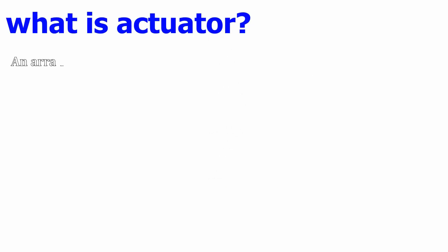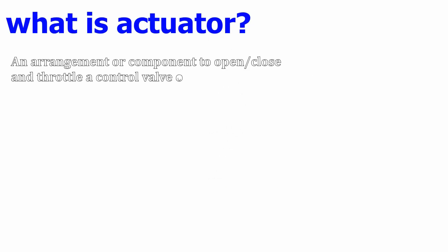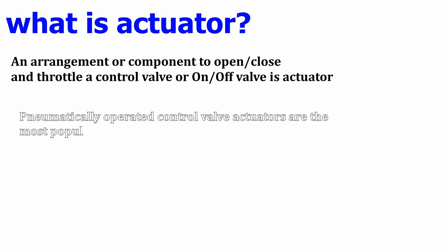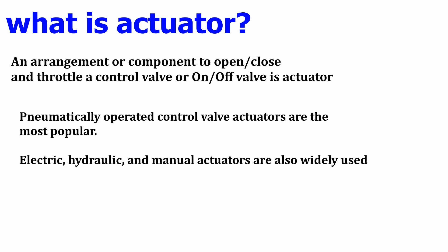So what is basically an actuator? An actuator is an arrangement or component used to open, close, or throttle a control valve, and can also be used for on-off valve purposes. Pneumatic operator control valve actuators are the most popular type, though we also use electric actuators, hydraulic actuators, and manual actuators.